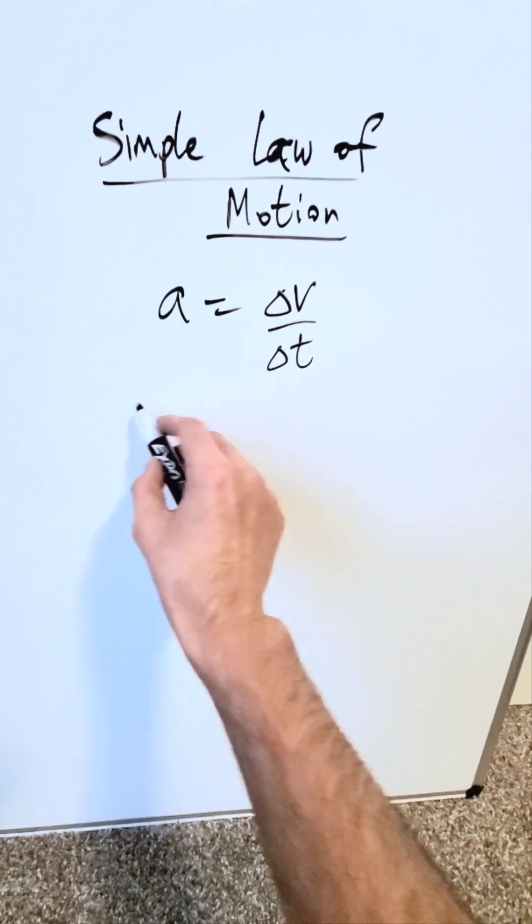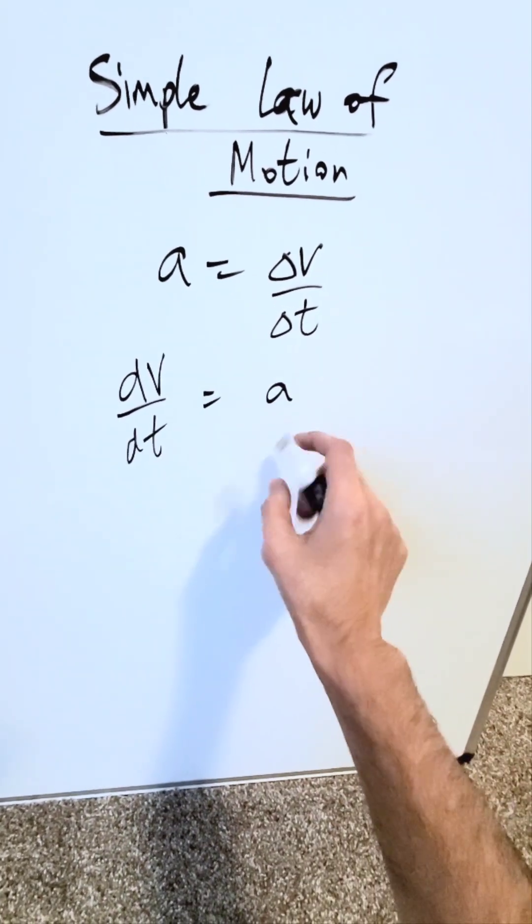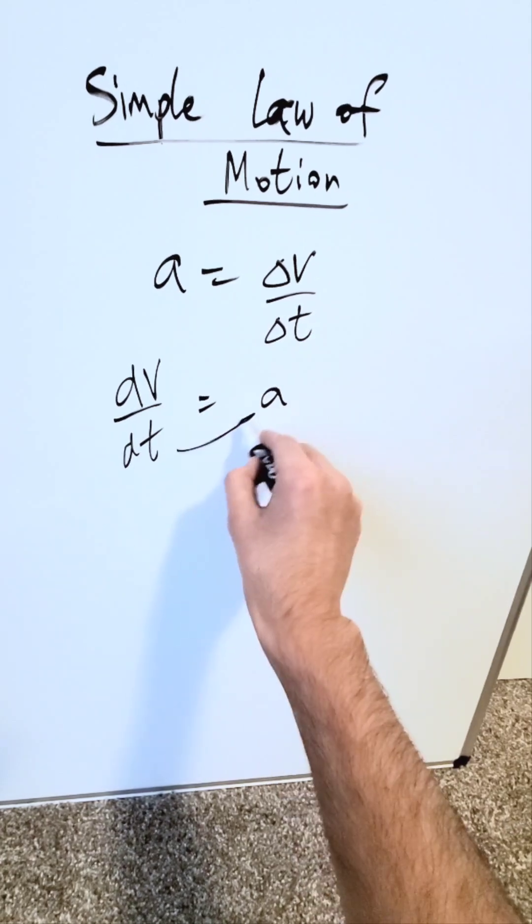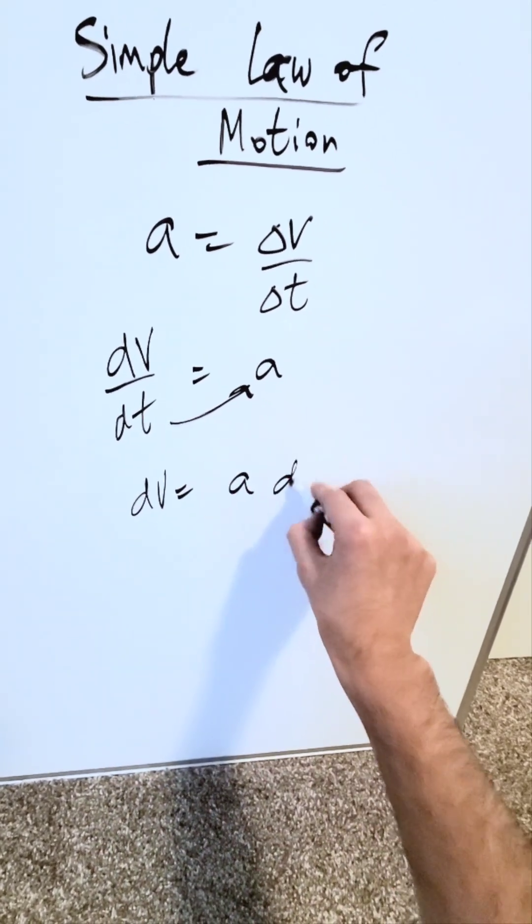How can you write this in a different way? You can say change in velocity over change in time will give you a certain acceleration. If I were to push this on the other side, dv is equal to a dt.